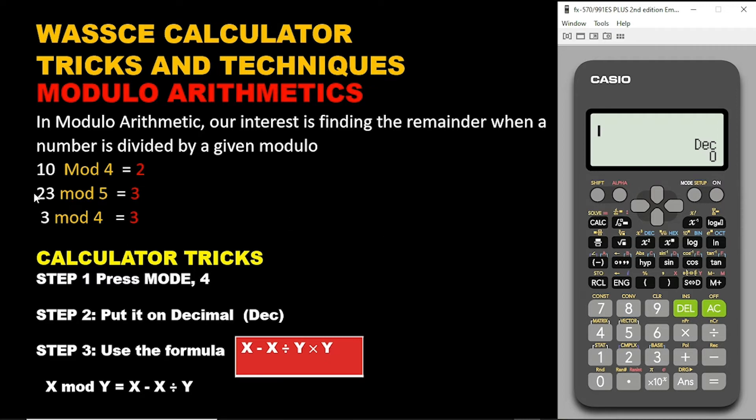So let's try it and see. So our x is 10. So we have 10 minus 10, that is x minus x, then divided by the y is the modulo, so divided by 4 times 4, because we have y times y. Let's see what we get. Voila, we are there. So that means this is a simple way of using calculator to solve modulo.